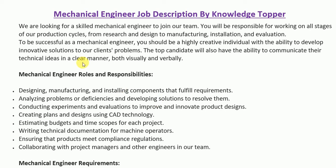Every job description starts with an introductory paragraph, as you can see on your screen, which is also called the job summary paragraph. Generally it is a brief paragraph that states the particular job title for which the company is looking to hire — in our scenario, a mechanical engineer. It also mentions key roles, responsibilities, and important skills in order to find the right candidate.